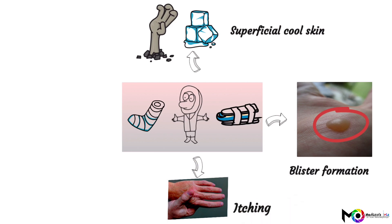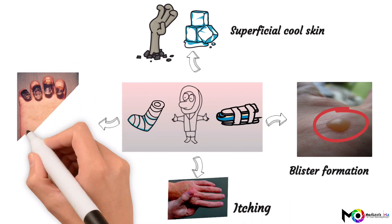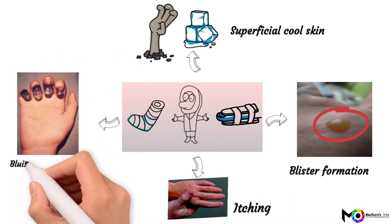In the later stages, the affected part becomes bluish to black in color, which means gangrene and necrosis has set in. Finally, let us discuss how we will treat frostbite.